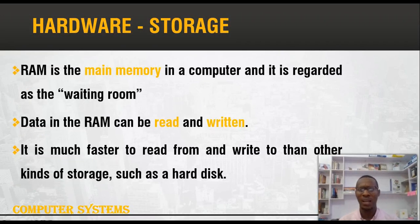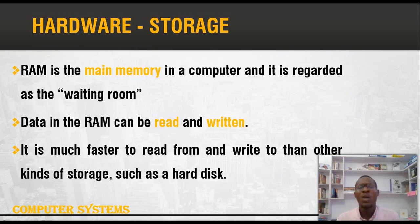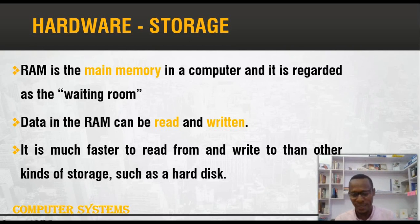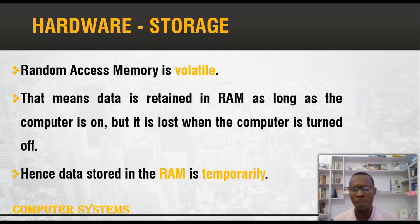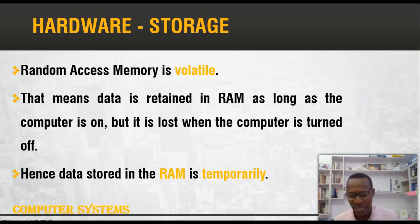RAM is the main memory of a computer, which is called the waiting room. As the name implies, Random Access Memory means that data can be read and written on RAM. It is faster to read and write to RAM than to hard disks. RAM is volatile, which means that as long as there is power on the computer system, every data is retained on the RAM, but once the power goes off, every activity is discarded.